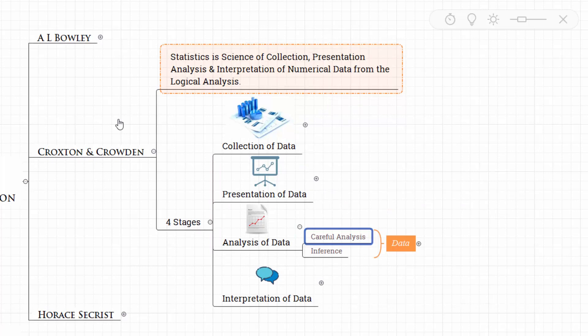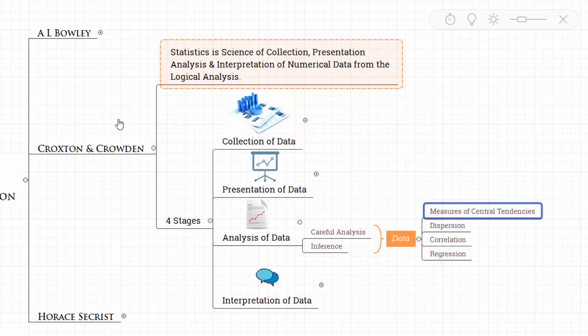Whatever the data that is collected, it should be measured and carefully analyzed. Only then we can infer something. This is possible through measures of central tendencies, dispersion, correlation, and regression.